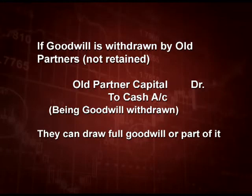Old partners are the receiver, so they are debited and cash is going out, so it is credited. Note: they can draw full goodwill or part of it. Suppose they get 10,000 and 5,000 and they want to withdraw half — one of them will withdraw 5,000 and the other 2,500. It all depends on what is given in the question — if half withdrawn, they withdraw half; if one fourth, they withdraw one fourth.